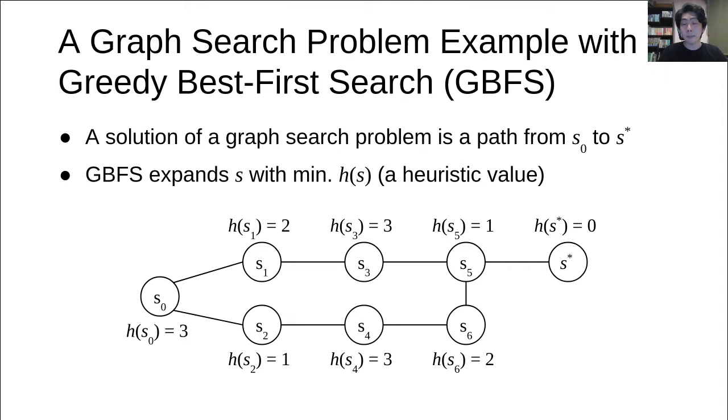Here, I show an example graph search problem and solve it with GBFS. A solution of a graph search problem is a path from an initial state S0 to a goal state S-star. GBFS uses heuristic value of a state, or h-value of a state, which estimates a distance from the state to a goal state.